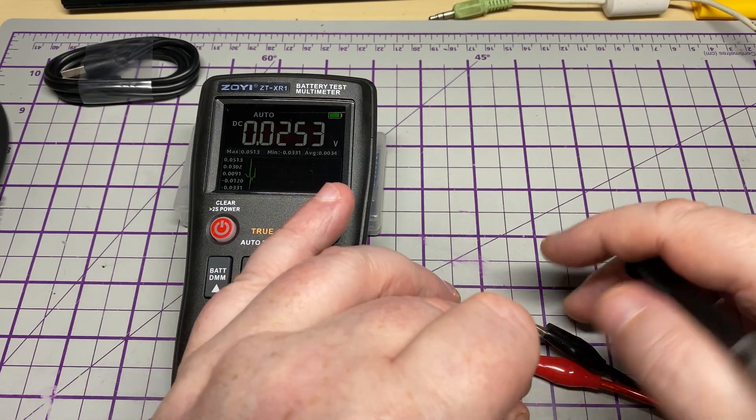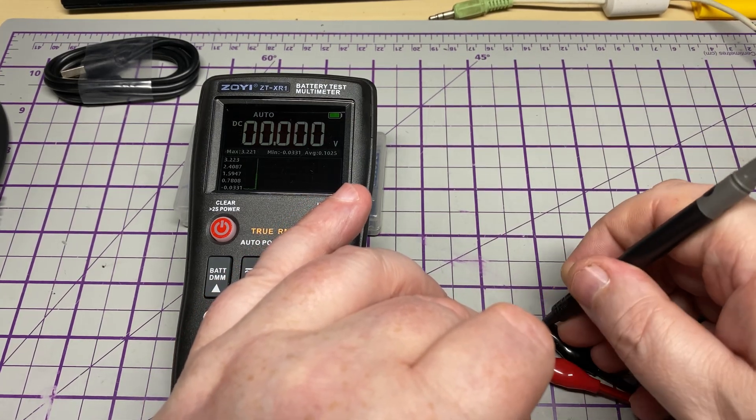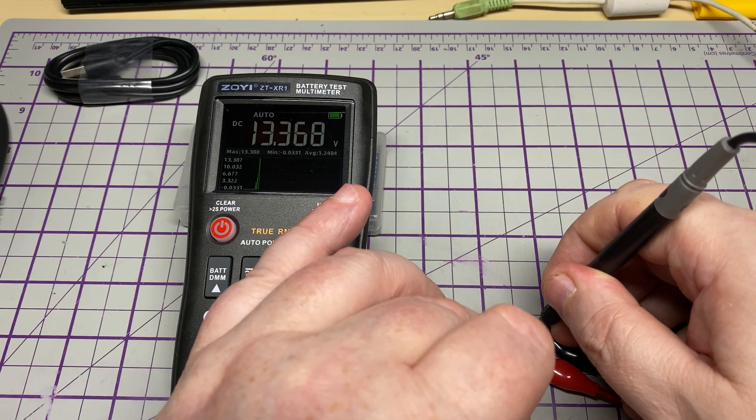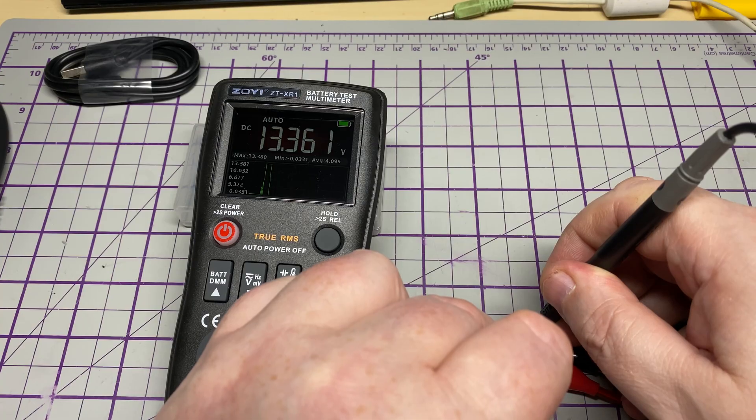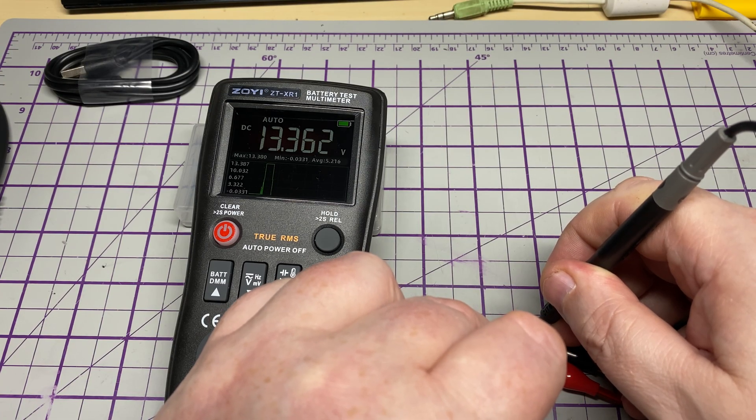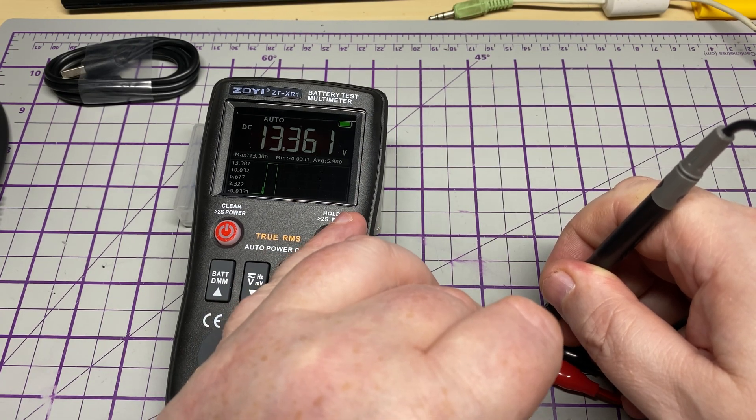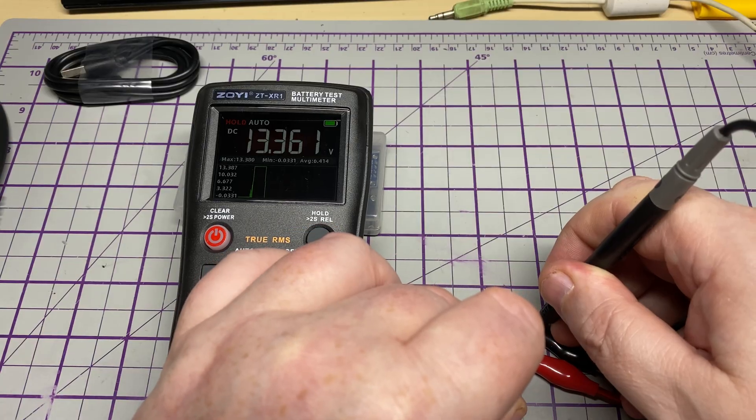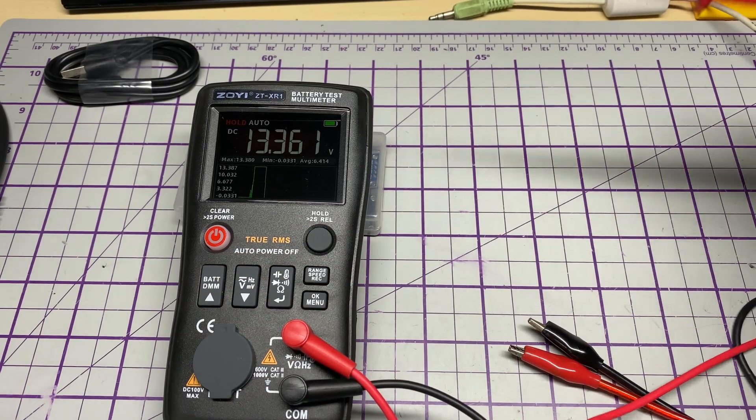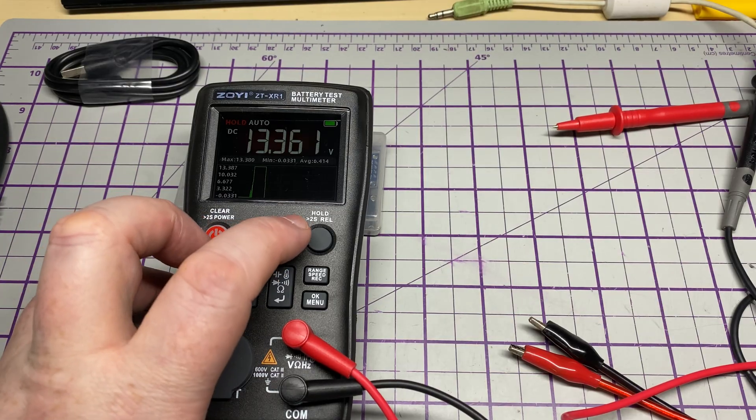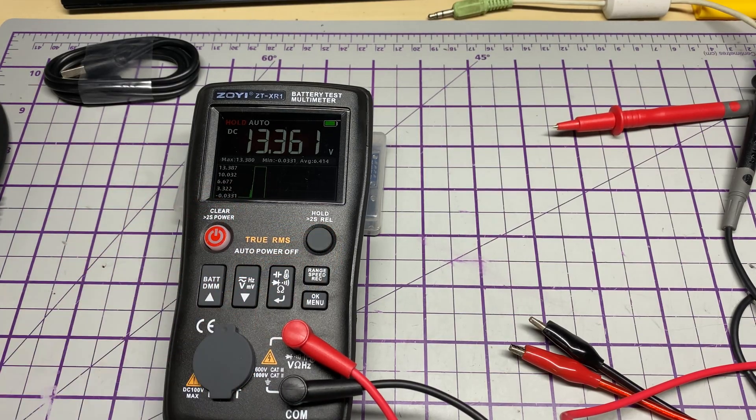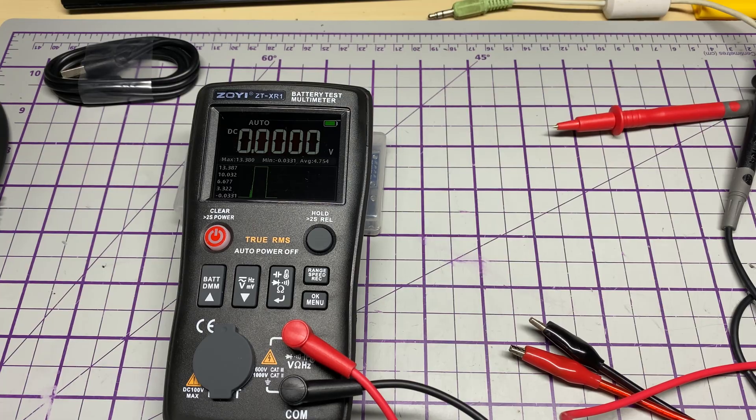I'm just trying to get the meter leads onto my bench supply and we're about 13, 13 and a half volts. Yep, no problem, it's reading voltage there. But you would expect it to, being a multimeter. We'll press hold and it holds the display. Press hold again and it will release it back to normal.